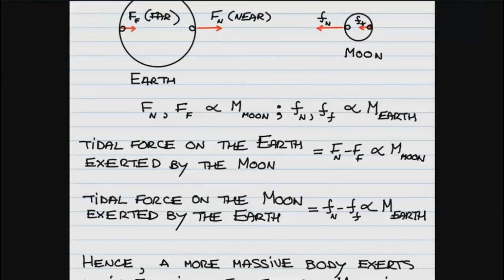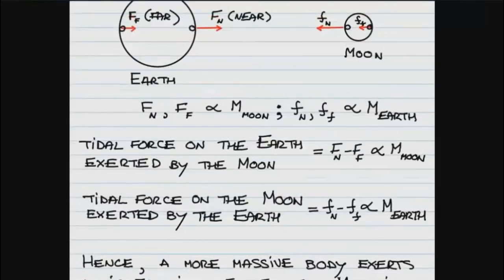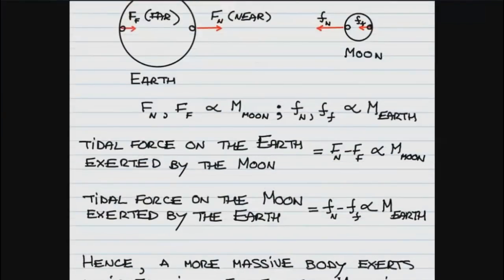So the tidal force is proportional to the mass of the body that is doing the stretching. Similarly, the tidal force on the Moon exerted by the Earth is given as the difference of near and far force — each proportional to the mass of the Earth — and therefore the tidal force on the Moon exerted by the Earth is proportional to the mass of the Earth. So the more massive body, in this case Earth, is exerting the bigger tidal force. The tidal force that the Earth exerts on the Moon is bigger than the tidal force the Moon exerts on the Earth.